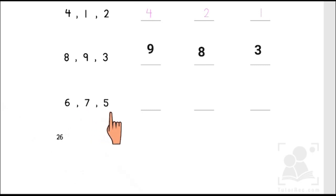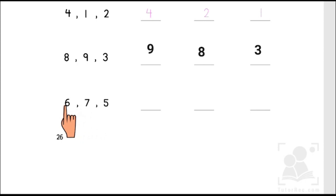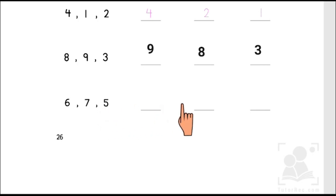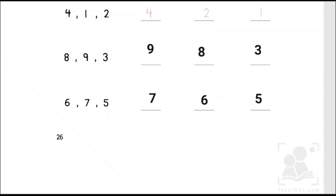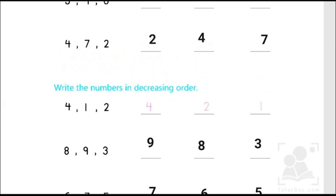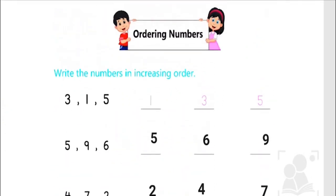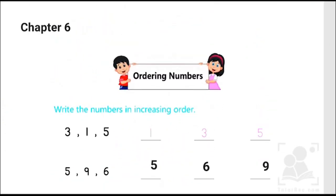The last one has 6, 7, and 5. For decreasing order, we write the greatest number at the beginning. Amongst these three, 7 is the greatest, then comes 6, and then comes 5 as the smallest number. So we are going to write: 7, 6, and 5.